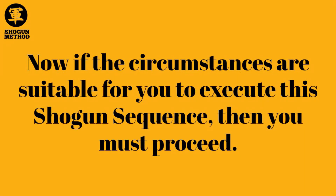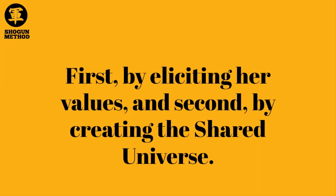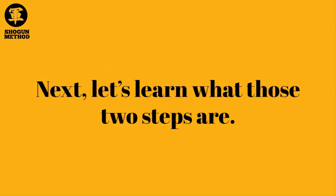If the circumstances are suitable for you to execute this Shogun sequence, then you must proceed. You will deliver this sequence in two steps: first, by eliciting her values, and second, by creating the Shared Universe. Let's learn what those two steps are.